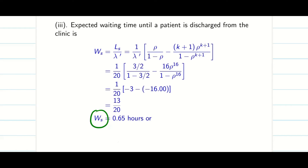The waiting time in the system Ws comes out to 0.65 hours. This means a patient entering the system spends 0.65 hours in total — for waiting and service combined. You can convert to minutes if needed. The key to solving these problems is remembering the formulas for Ws, Ls, Wq, Lq, lambda-dash, P₀, and P_n, then correctly identifying what the question requires.